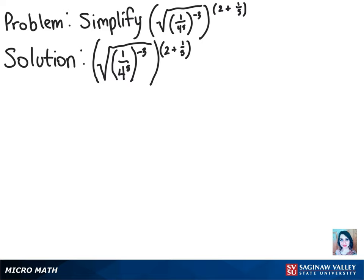So the first thing that we can do is raise the numerator and denominator to the power of negative 3. So when we do that, we'll have the square root of 1 to the negative 3rd power over 4 to the negative 15th power, all raised to the power of 2 plus 1 fifth.